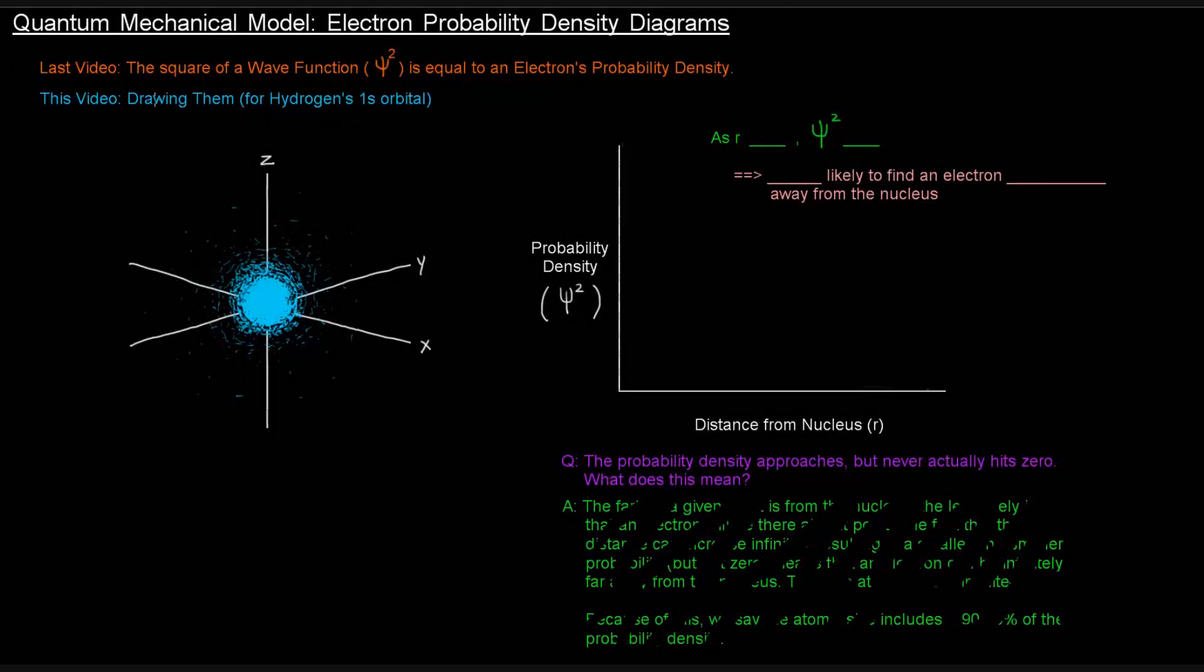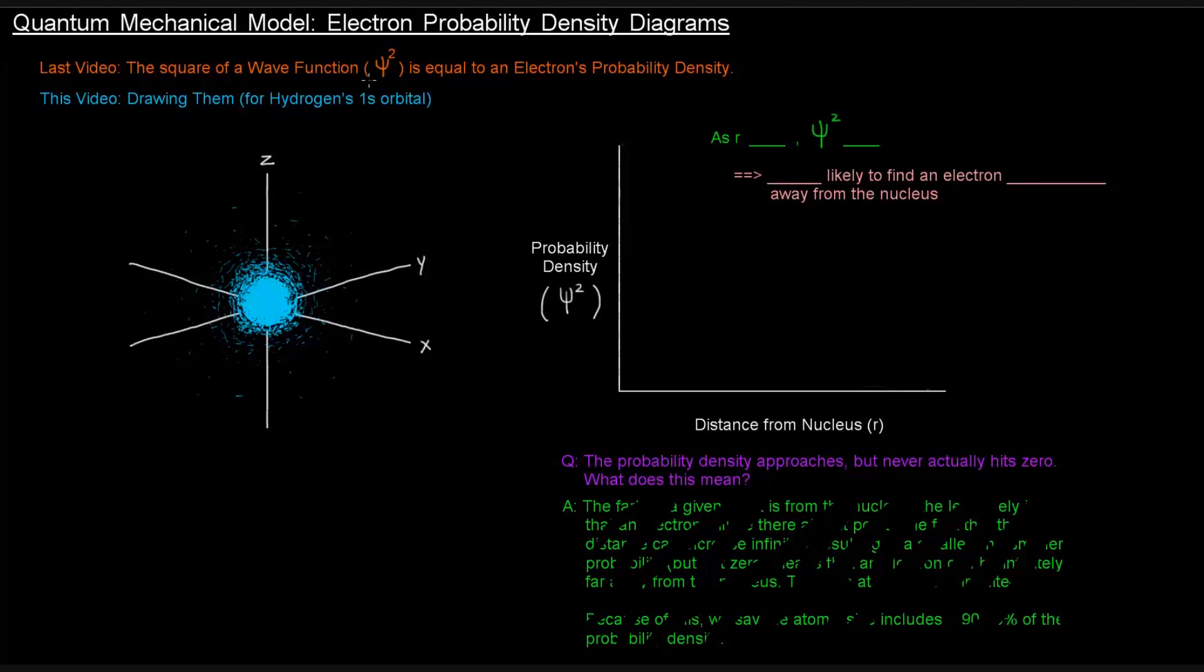So in the previous video, we mentioned that the square of a wave function, psi squared, is equal to the electron's probability density, which is the likelihood that we'd find an electron in a certain region of space. In this video, we're going to draw them, specifically for hydrogen's 1s orbital.